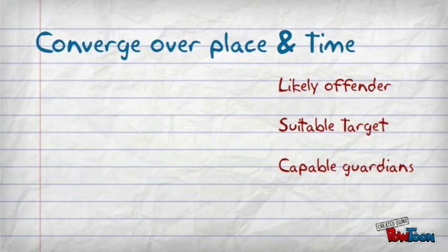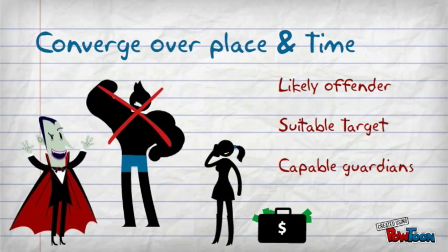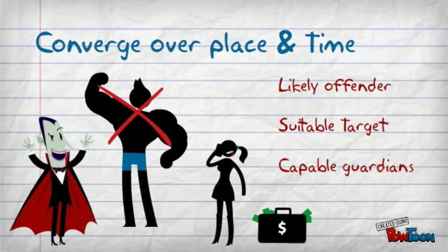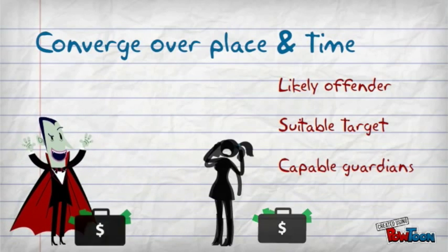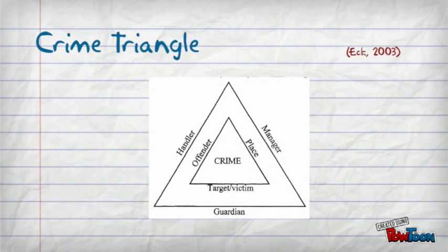The very straightforward nature of this theory states that crime results from the convergence of these three elements: the presence of an offender and target, and the absence of capable guardians. This is the crime triangle.